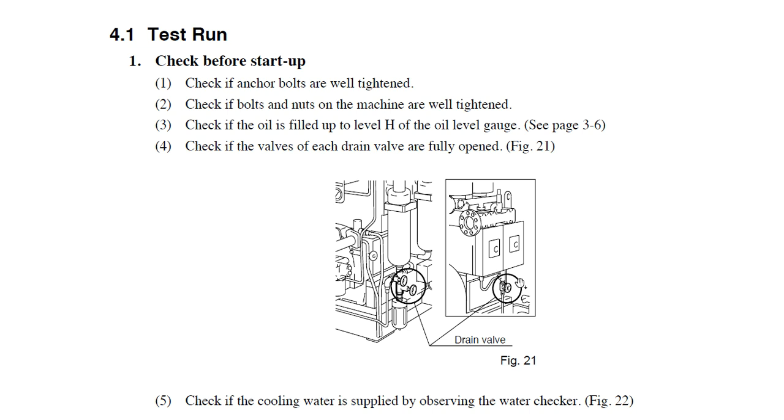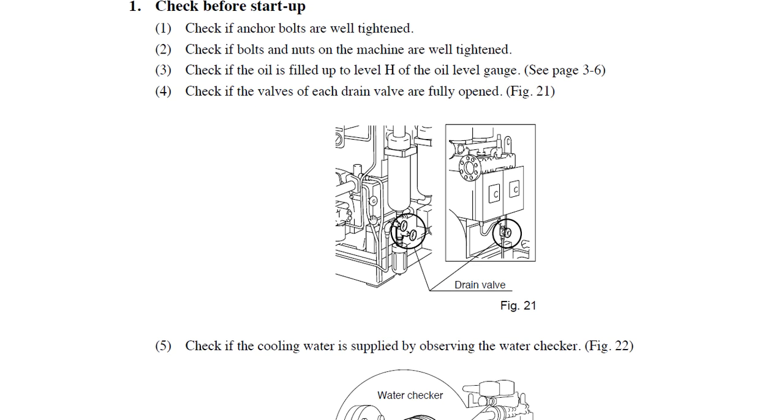When we like to make a test run, the checks: we check the anchor bolts that are well tightened. We check that all the nuts, all the bolts are tight on the machine. We have filled the oil to the high level. We have opened the drain valves shown here in the second stage and first stage.